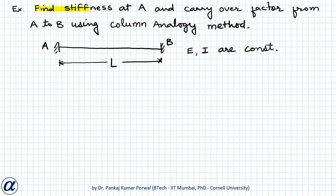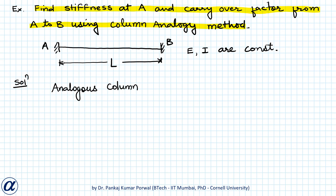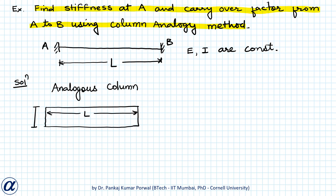In this question, we want to find the stiffness at A and carry-over factor from A to B using the column analogy method. To solve this, the first step is to draw the analogous column. The analogous column will be a short column with width of cross section L and breadth 1/EI — this is the cross section of the analogous column.